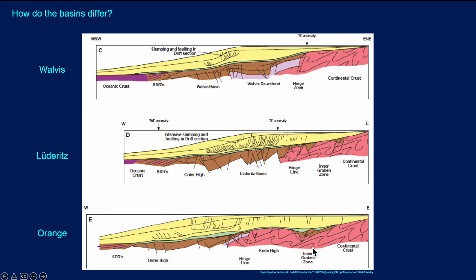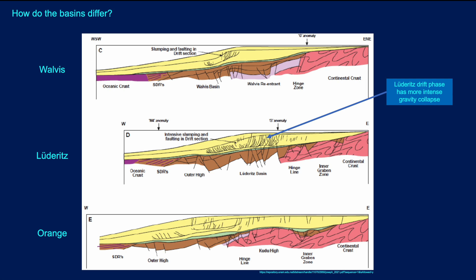Looking at the basins, these sections do differ from north to south. There are thicker Cretaceous sections in places, but the Tertiary is very thick in all of these basins. In particular, in the Lüderitz, there looks to be a more intense gravity collapse within this basin, suggesting potential for very late and recent generation of hydrocarbons. Due to there only being one well, there is very limited information on the lithofacies. There are no wells on the slope or in the deep marine, so no proof of source, reservoir, and seal in those parts of the basin — but predicting lithofacies suggests all those components should be present.